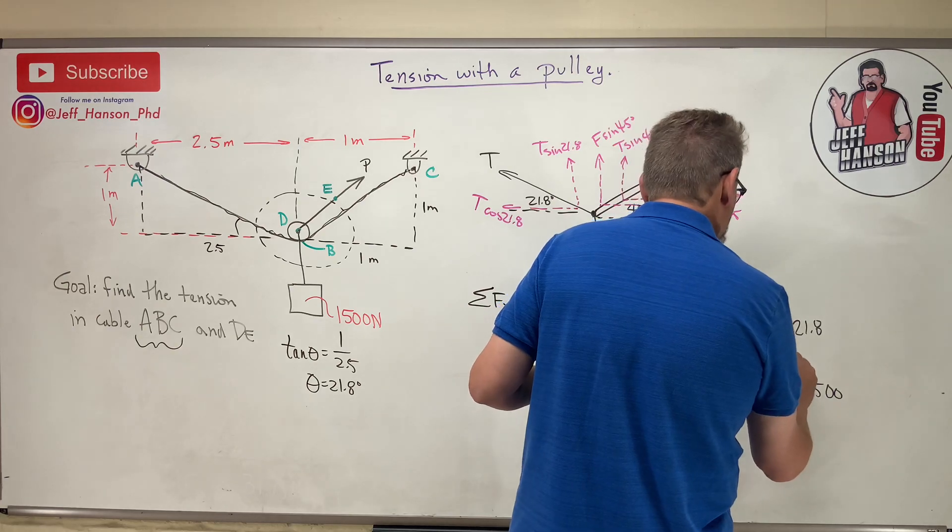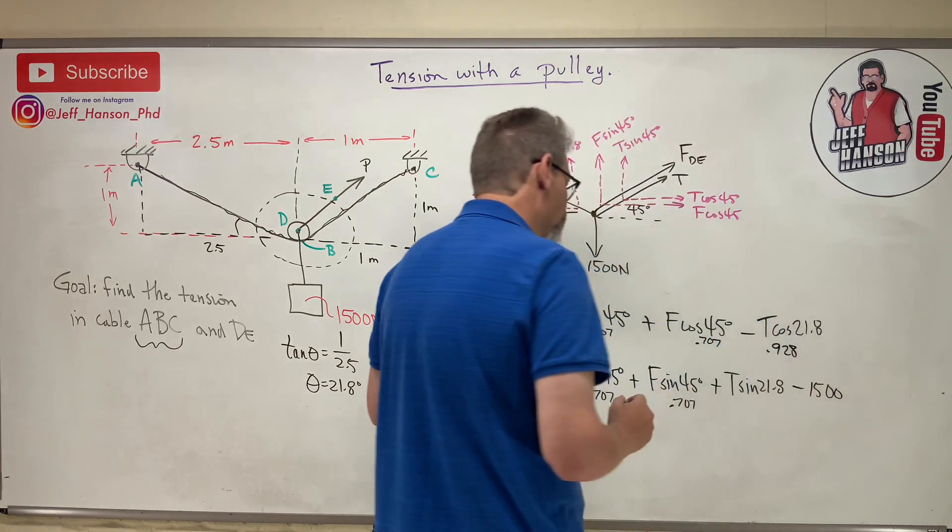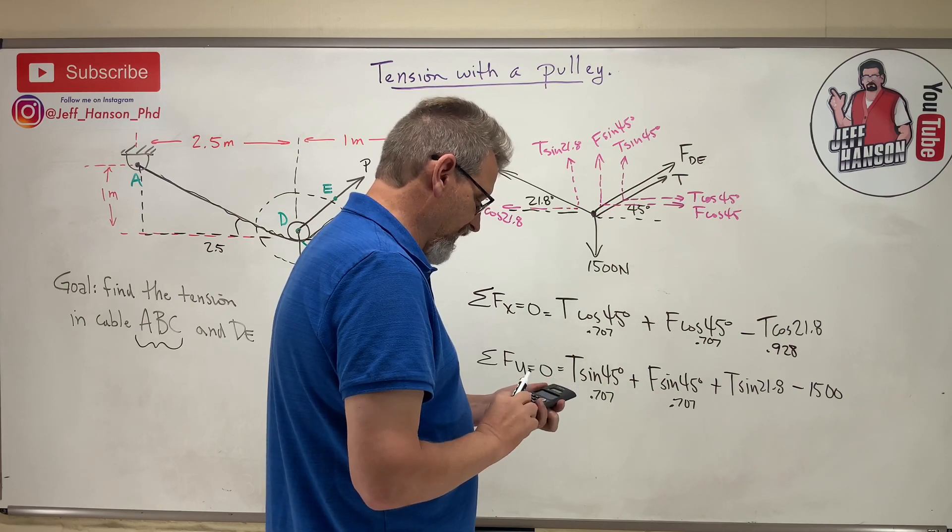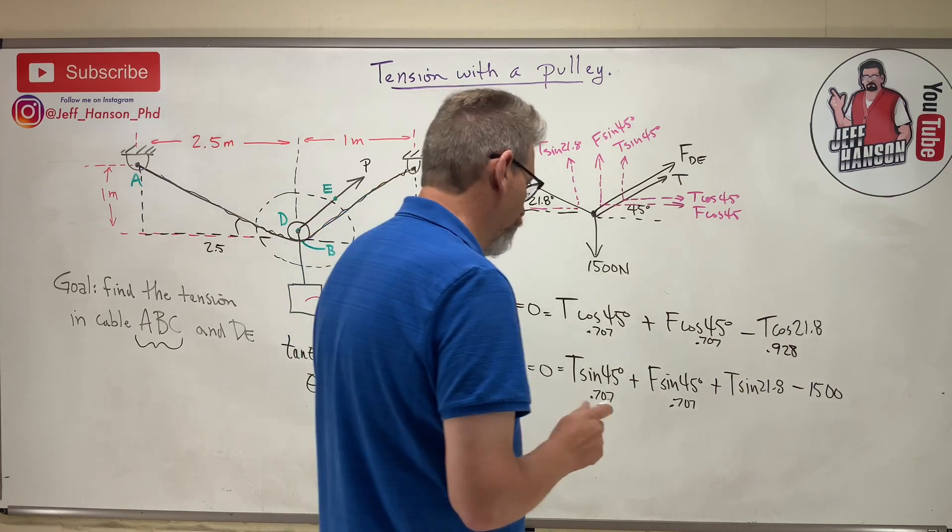And then the sine of 21.8 is how much? That's 0.371.